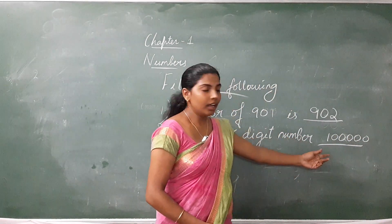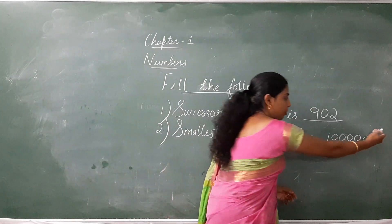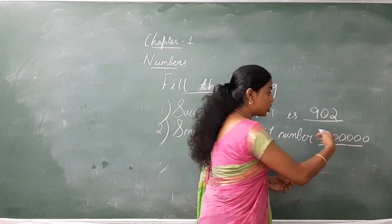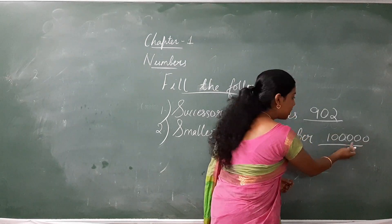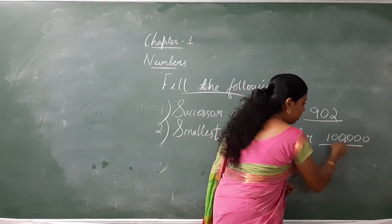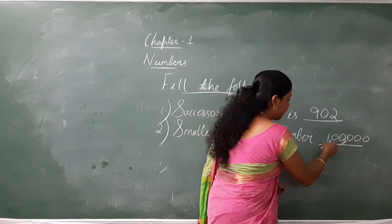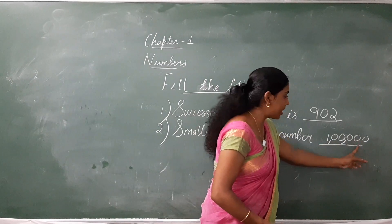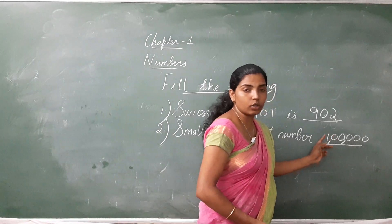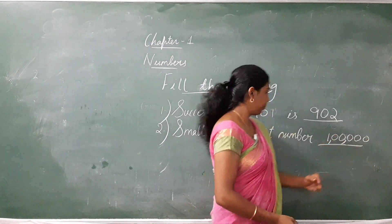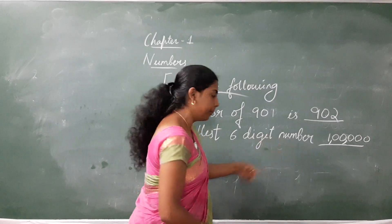Can you read this number? We want to read this number, so we have to put a comma. From the right side, after each period, we have to put a comma: ones, tens, hundred — put a comma — thousand, ten thousand, lakh. So the number is 1 lakh. So 1 lakh is the smallest 6-digit number.